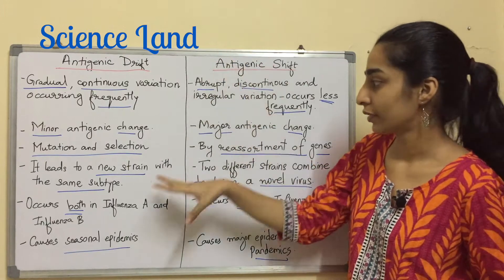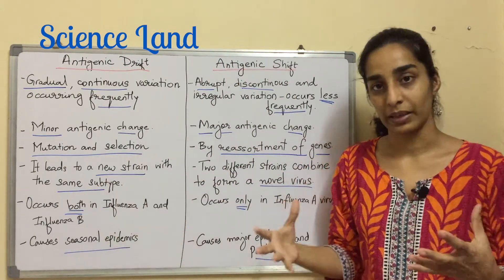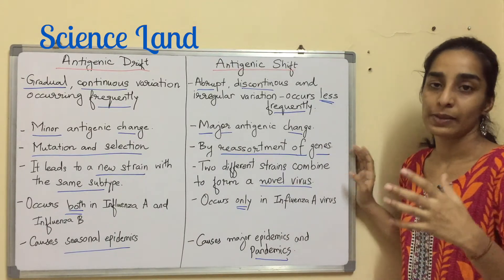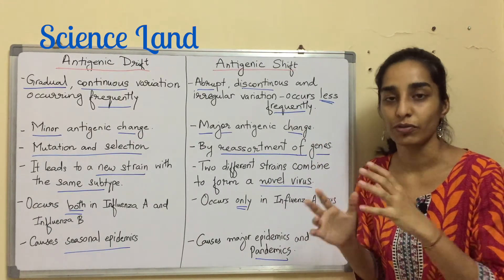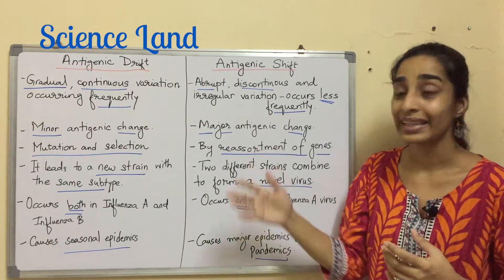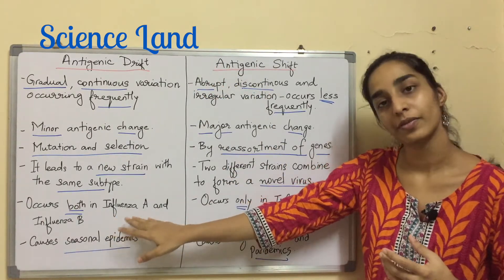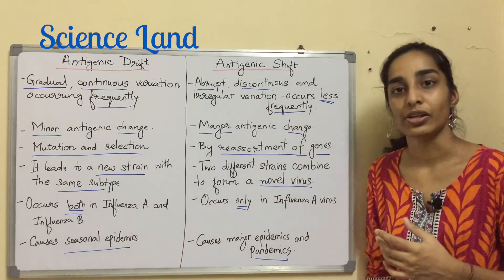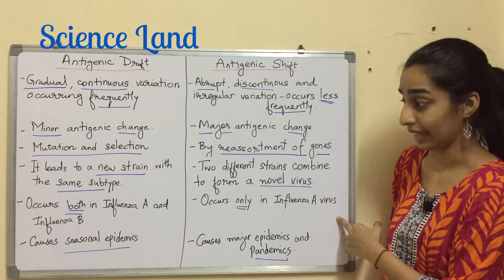Antigenic drift leads to a new strain within the same subtype, whereas antigenic shift is when two different strains combine together to form a novel virus. Antigenic drift occurs in both influenza A and B, while antigenic shift occurs only in influenza A.